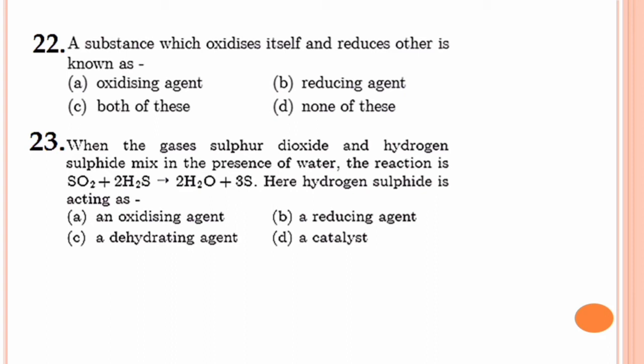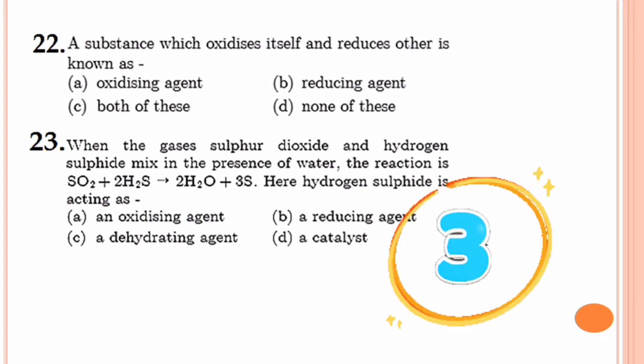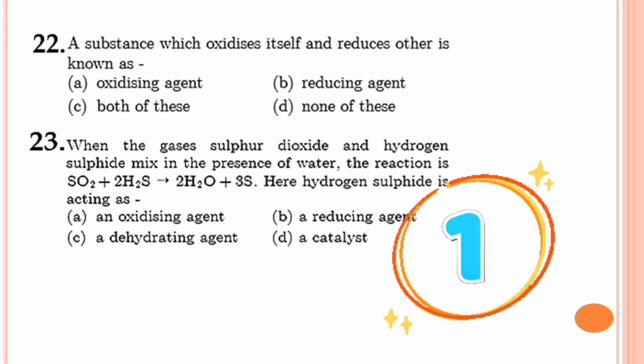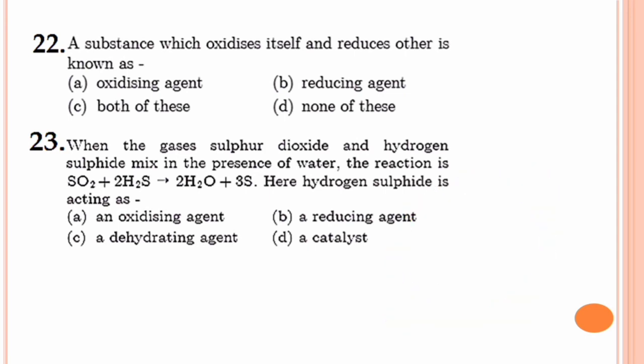Question 22. A substance which oxidizes itself and reduces the other is known as? In a redox reaction, if a substance is reducing the other reactant, it acts as a reducing agent. Reducing agents reduce the other reactant and themselves get oxidized. Hence the option is option B, reducing agent.